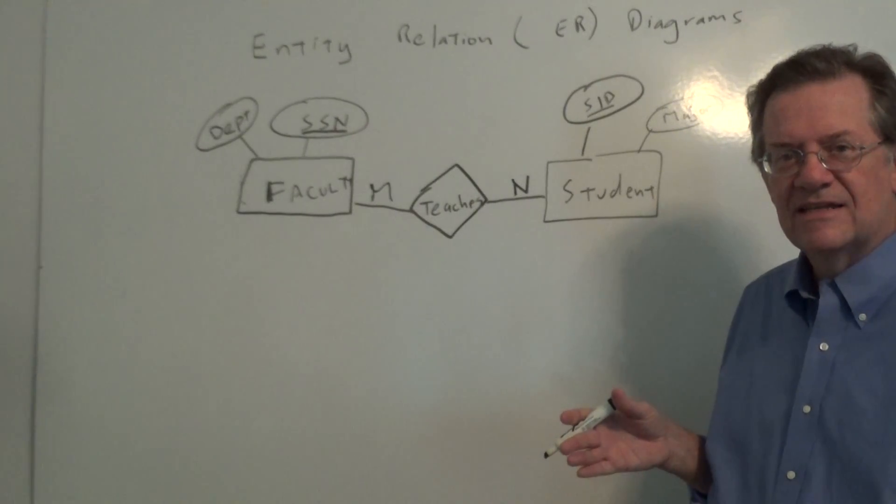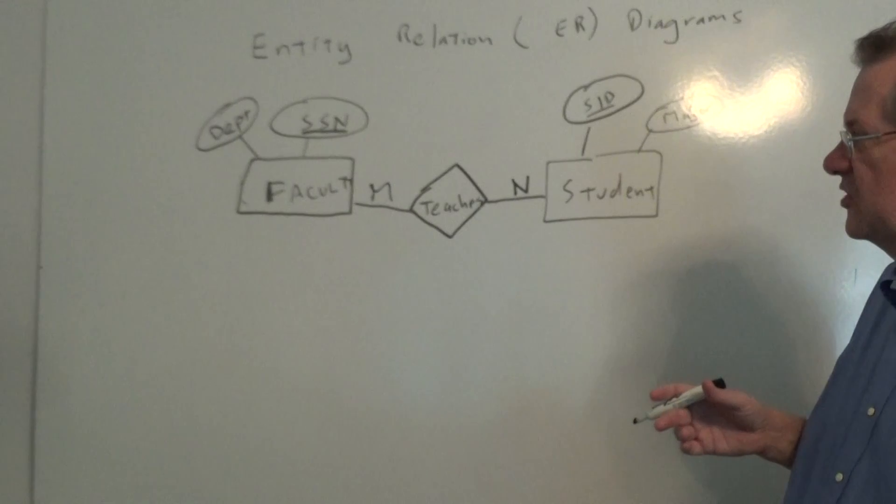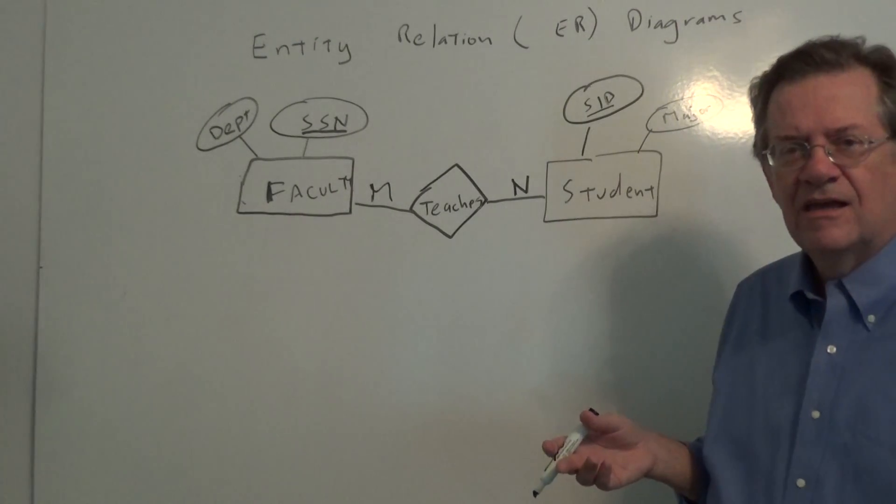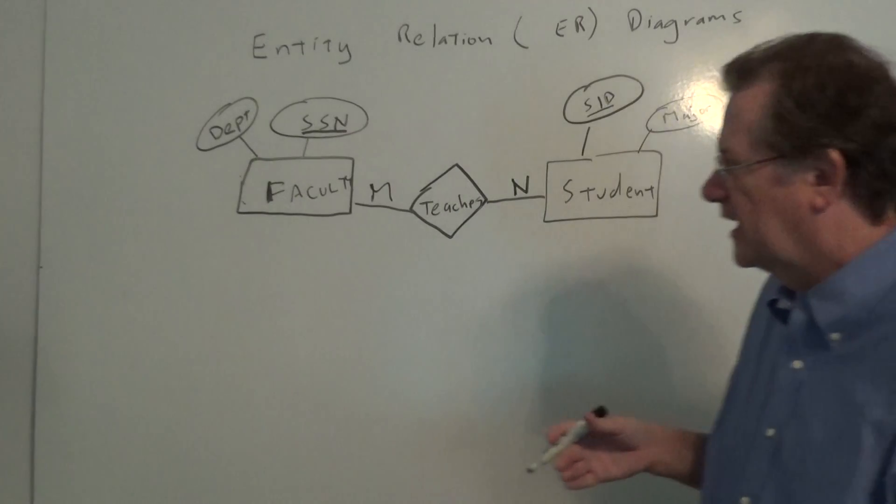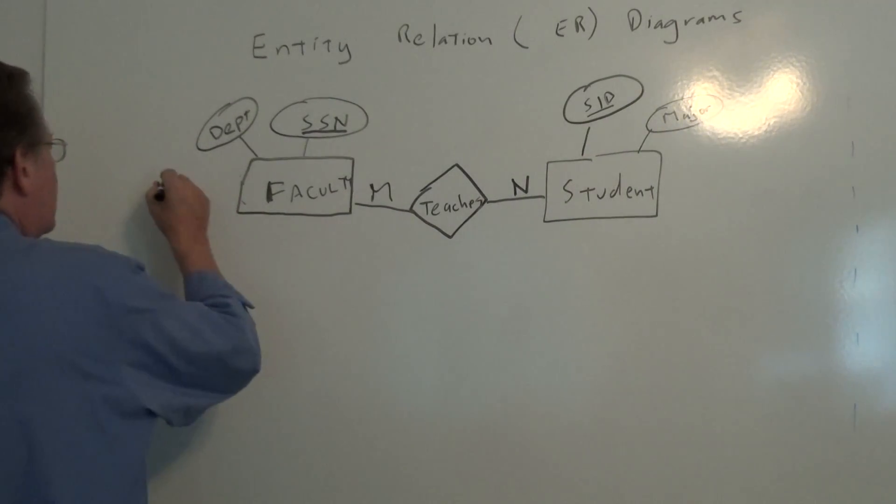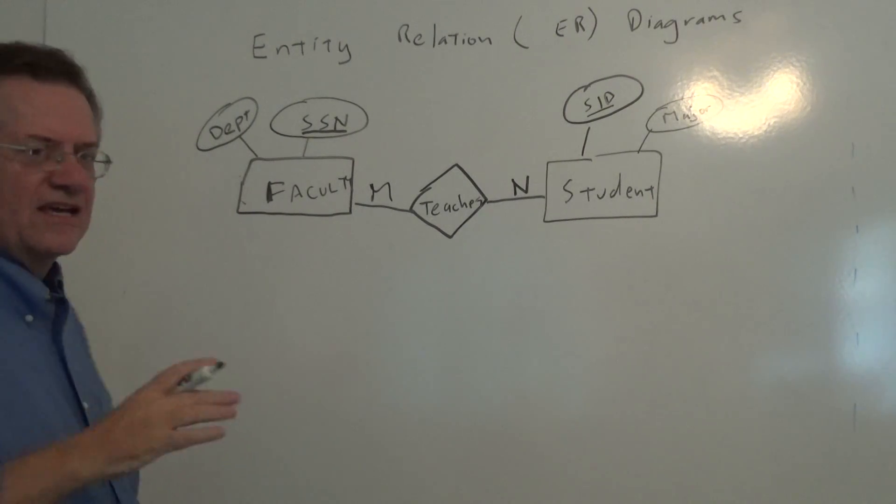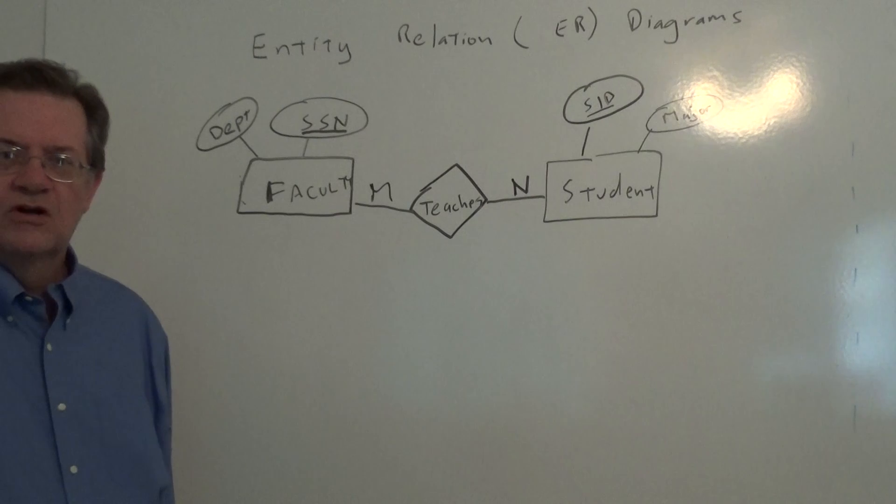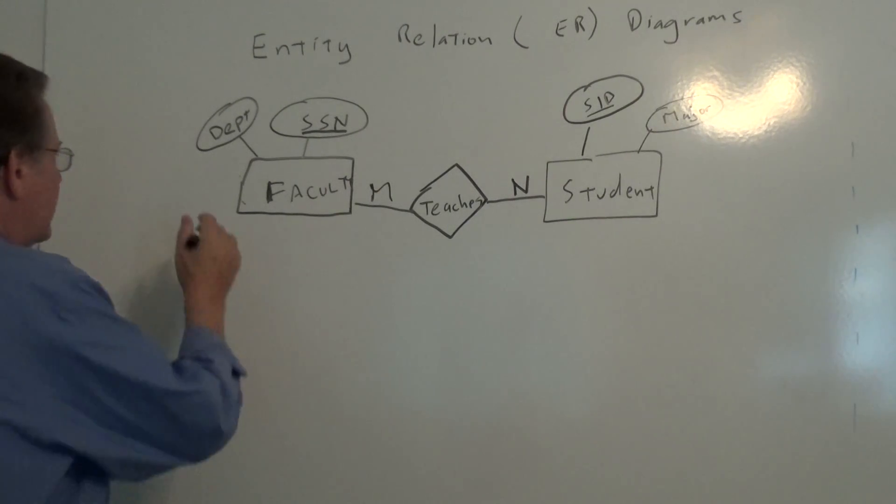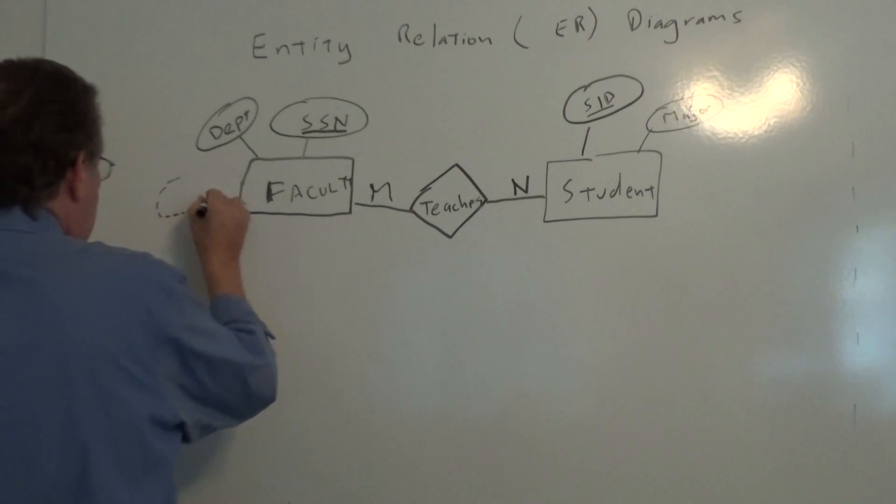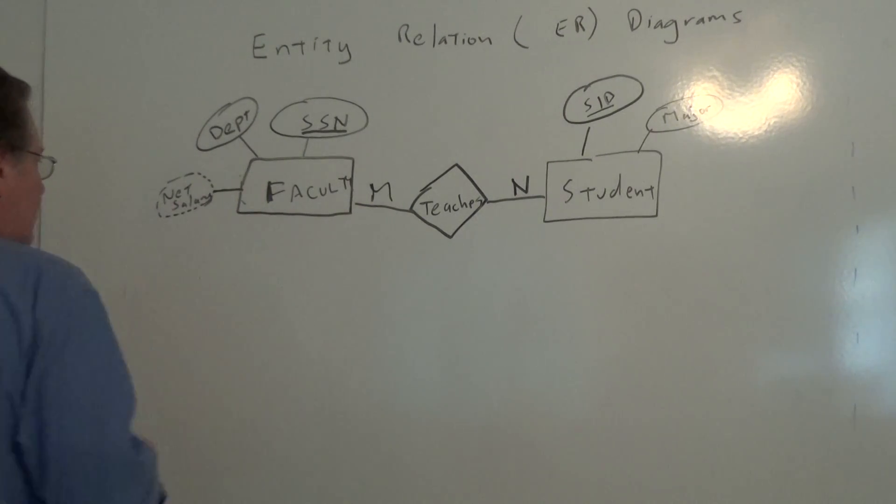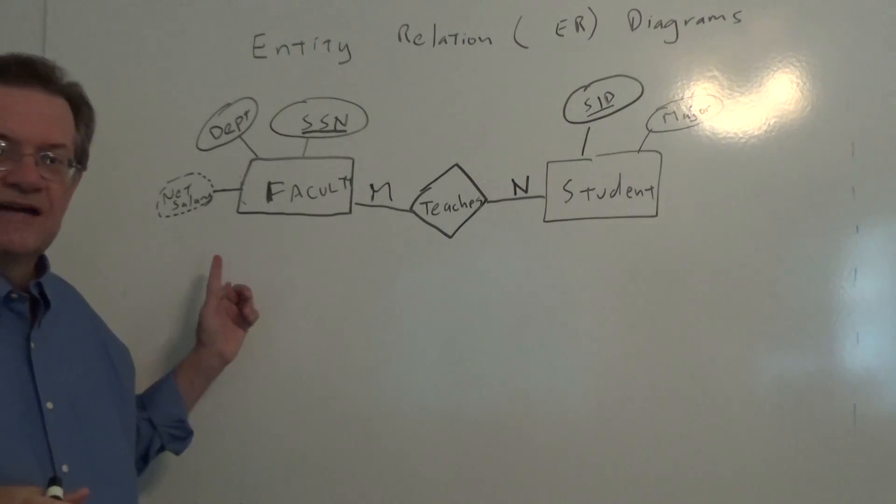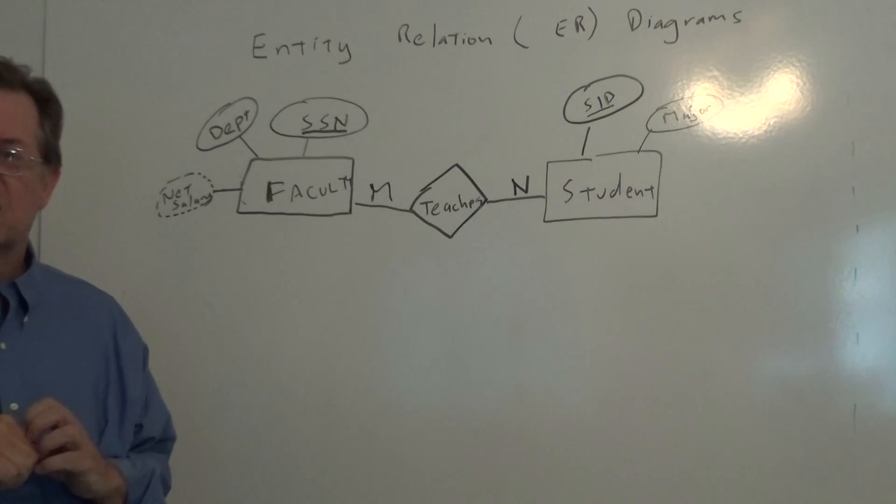Now to illustrate some of the other ideas that we have, one of the things that we can do is, let's say a faculty member has a salary. And if the salary, let's say a net salary, is based on the gross minus the taxes, then we would use a dashed line. And we might put the word net salary in there. And the net salary, what that means is that it's a derived attribute. So any time you see a dashed line, it's a derived attribute.